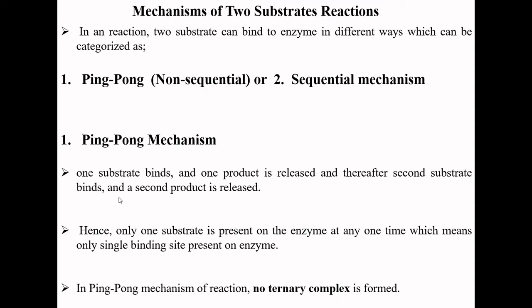In the ping-pong mechanism, only one substrate is present in the enzyme at a time, which means the enzyme contains only one substrate binding site. Since only one substrate can bind to the enzyme at a time, no ternary complex is formed — only a binary complex is formed.